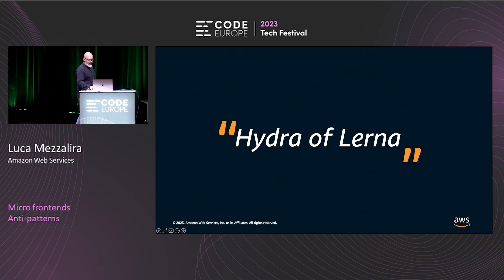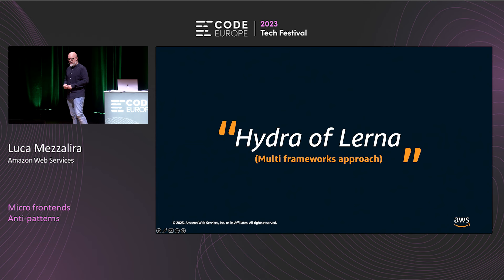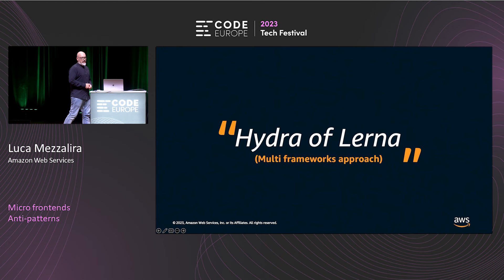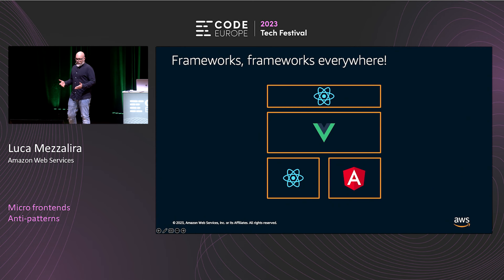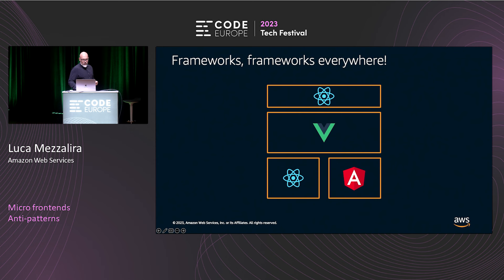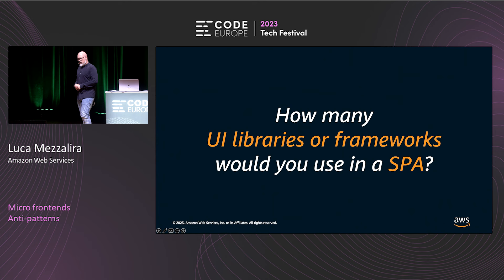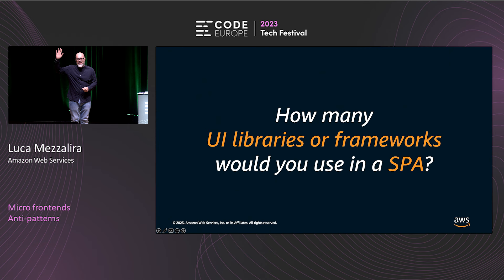The next anti-pattern is called the Hydra of Lerna — probably the second most common offender for micro-frontends: the multi-frameworks approach. Many people have thought micro-frontends are a good way to do something like that. I would argue that despite you can do it, you shouldn't. Let me ask you a question: how many of you, when designing a single-page application, are using multiple UI libraries or frameworks? Raise your hand.